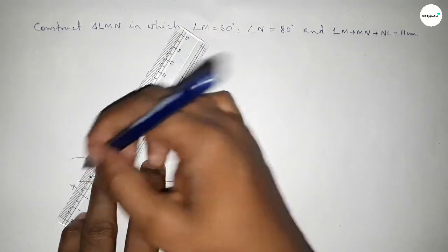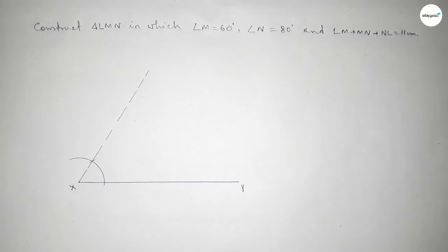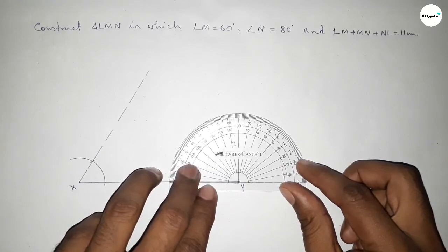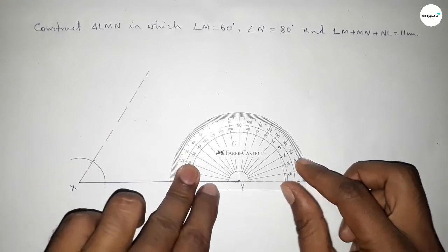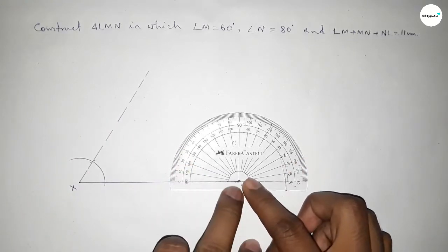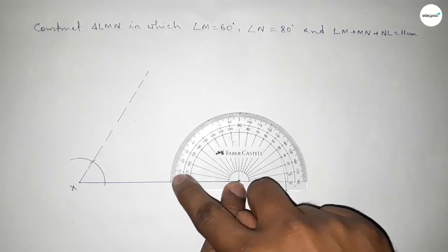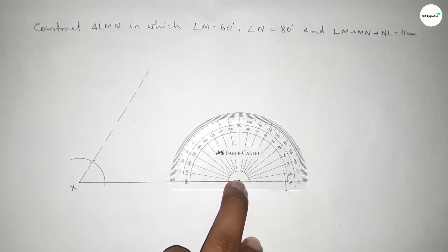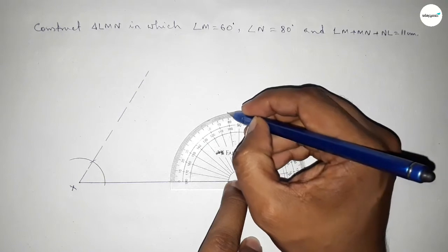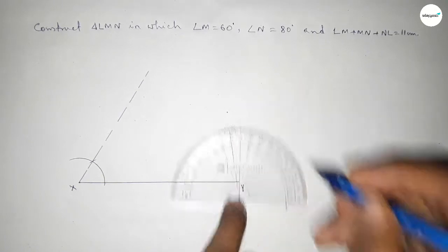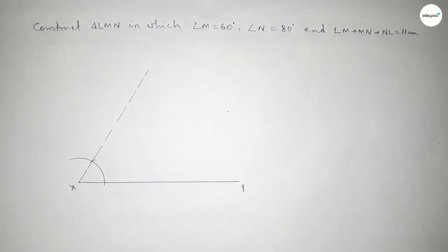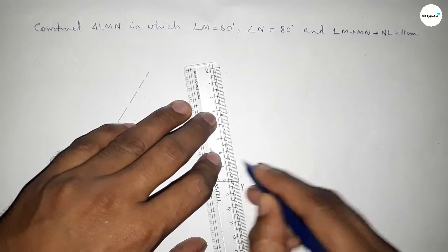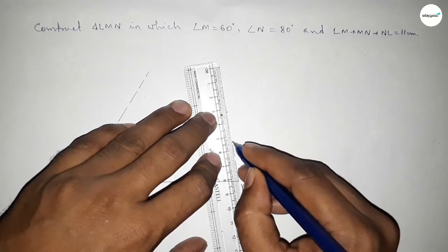Next, we have to draw an 80 degree angle at point Y. Putting the protractor on point Y and counting 80 degrees — so this is 80 degrees. Joining this line to get an 80 degree angle at Y.